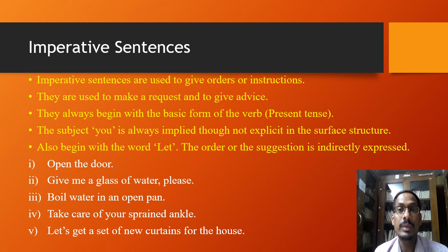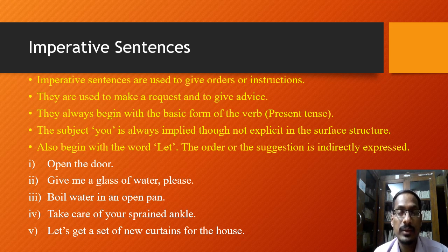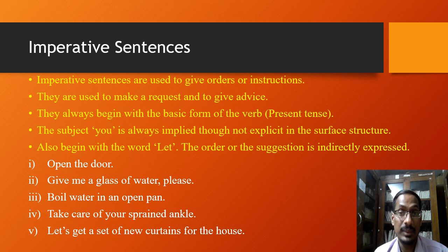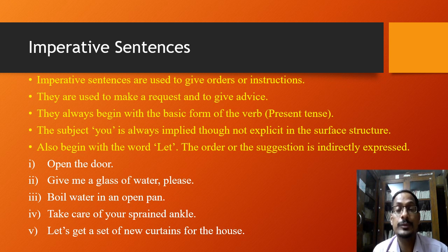Look at the examples: 'Open the door.' 'Give me a glass of water please.' 'Boil water in an open pan.' 'Take care of your sprained ankle.' 'Let's get a set of new curtains for the house.' All these are imperative sentences because they are used to give orders or instructions. 'Open the door' is an order. 'Give me a glass of water please' or 'Boil water in an open pan' are telling you something to do. 'Take care of your sprained ankle' is advice or an instruction.